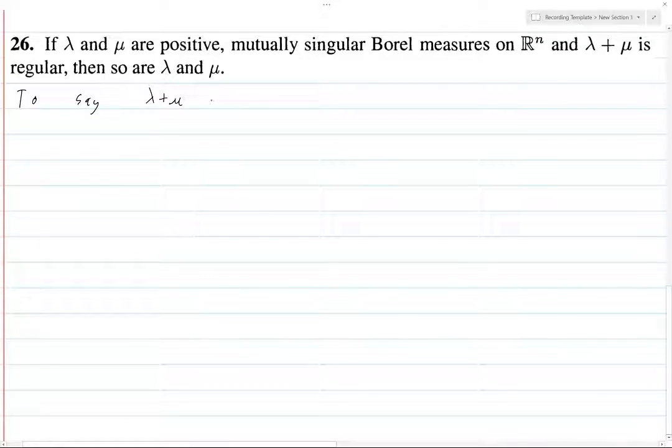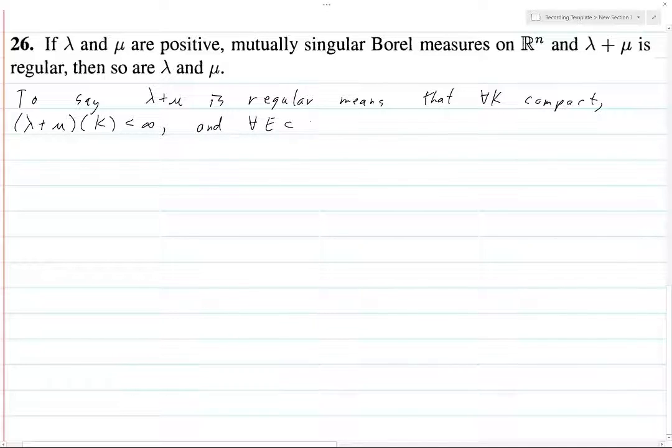To say λ + μ is regular means that for all k compact, we have λ + μ of k is less than infinity, and for all Borel subsets of R^n, and we're going to call this script B.